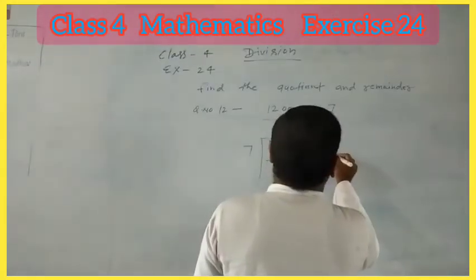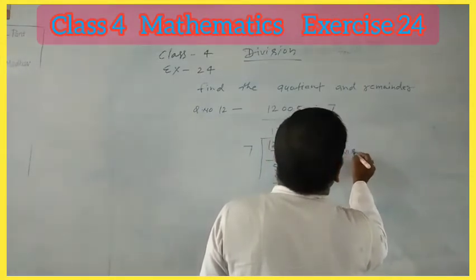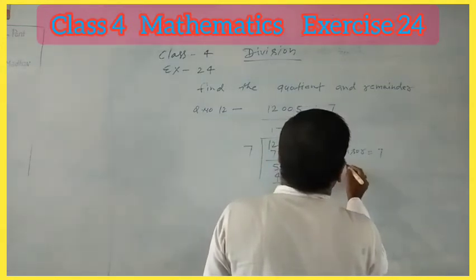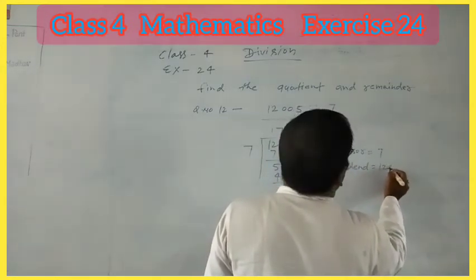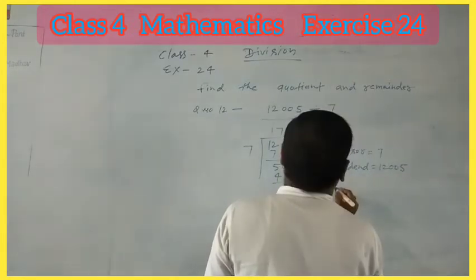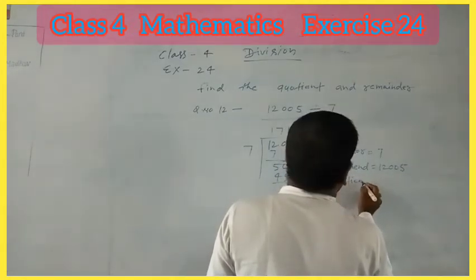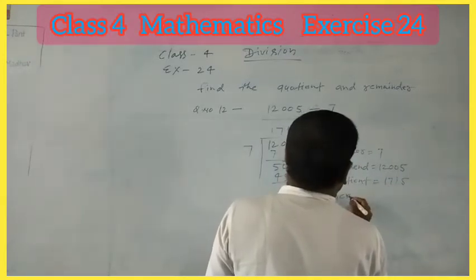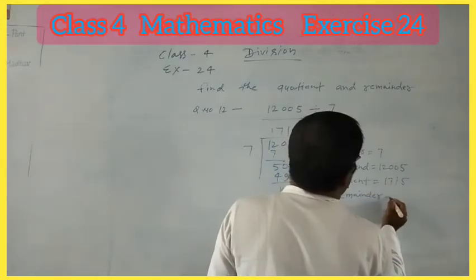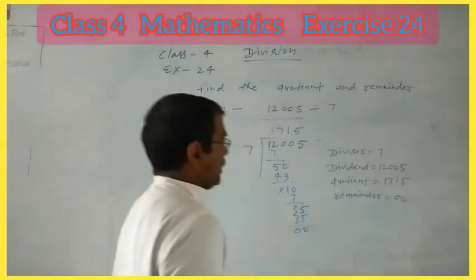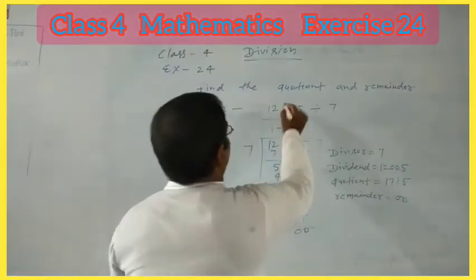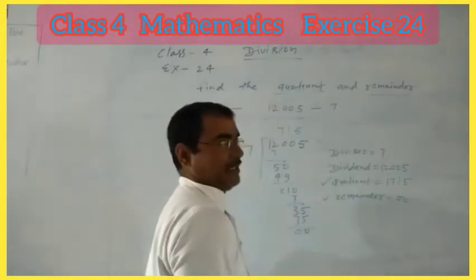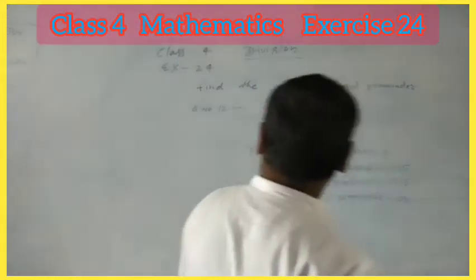The result is 1,715 with remainder 0. In this question, the question asks me to find the quotient and remainder. So your answer is the quotient and remainder. Also, I will teach another question.